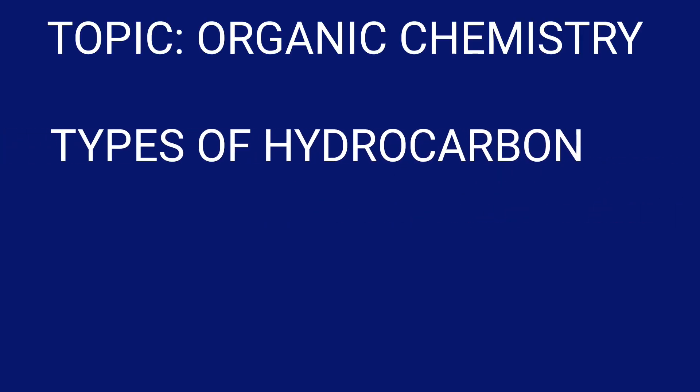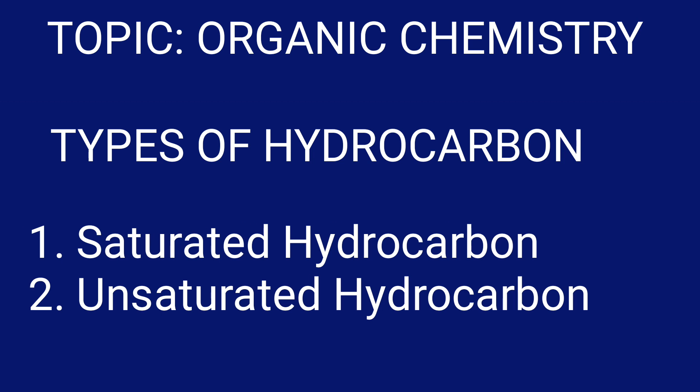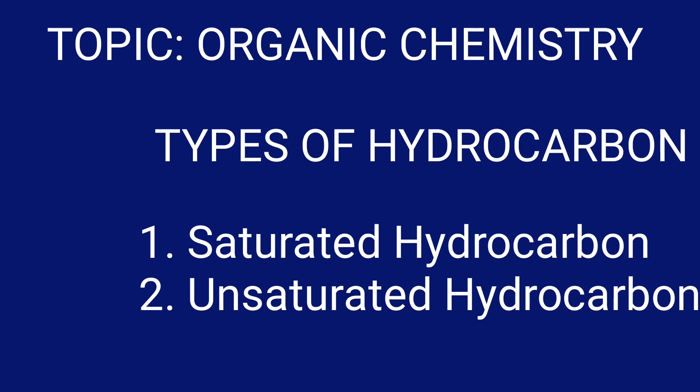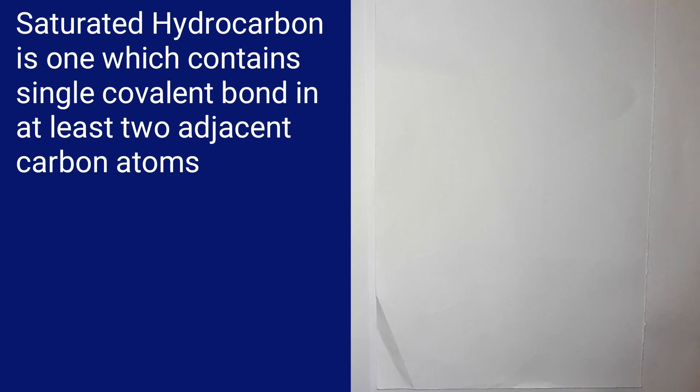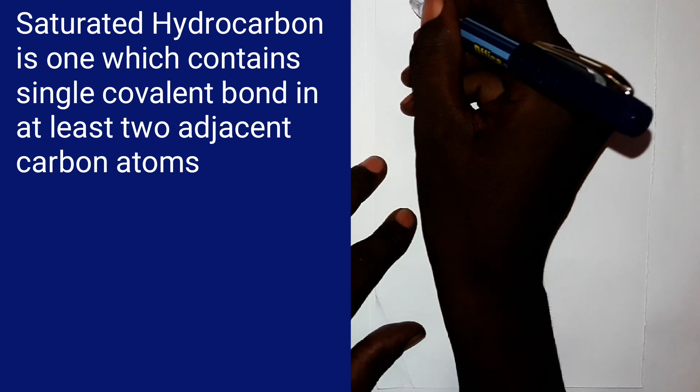Now, we have two types of hydrocarbons in this topic. We have saturated hydrocarbons and unsaturated hydrocarbons. Saturated hydrocarbons are those which contain single bond in at least two adjacent carbon atoms, as follows.